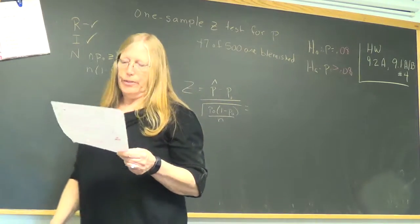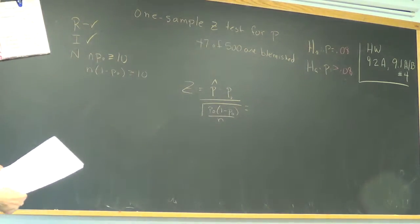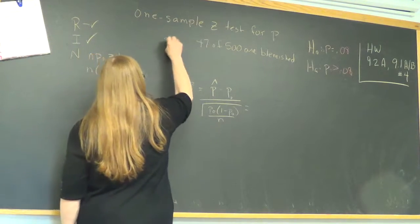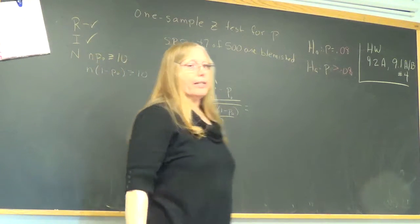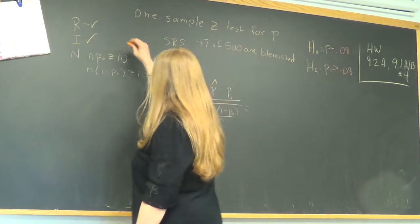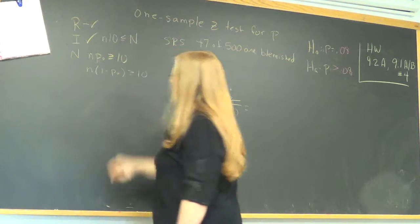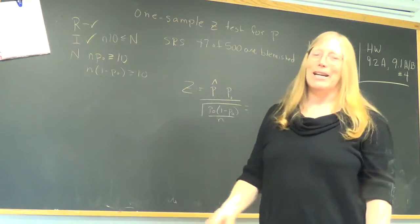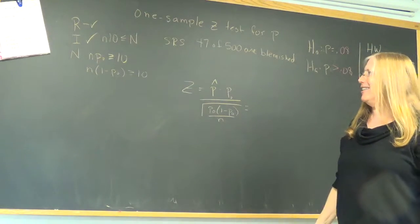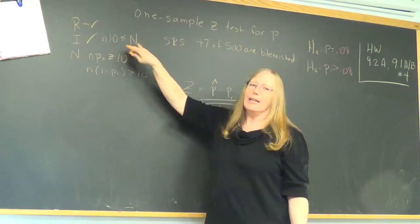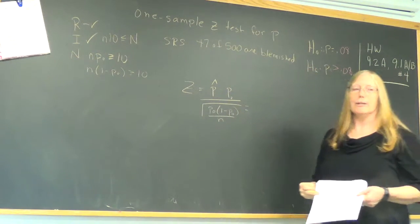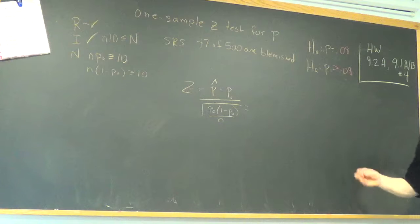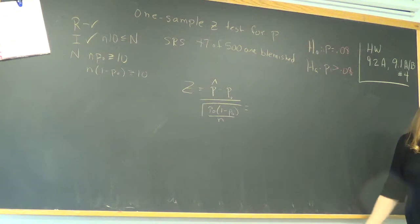I am going to take a sample of 500 potatoes and 47 of 500 are blemished. So I start down my RIN. I will just state that I chose those potatoes from the chip trap randomly. So I'll check that off. Independence. It is a simple random sample. So I do have to do a calculation this time. And it is the 10% rule. So we're going to take N times 10 and see if it's less than the whole population. So 5,000 potatoes.